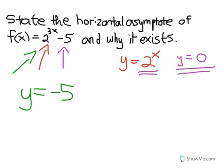When you shift that down 5, which is what this minus 5 does, that's our vertical shift, that also shifts the horizontal asymptote down from 0 to -5.